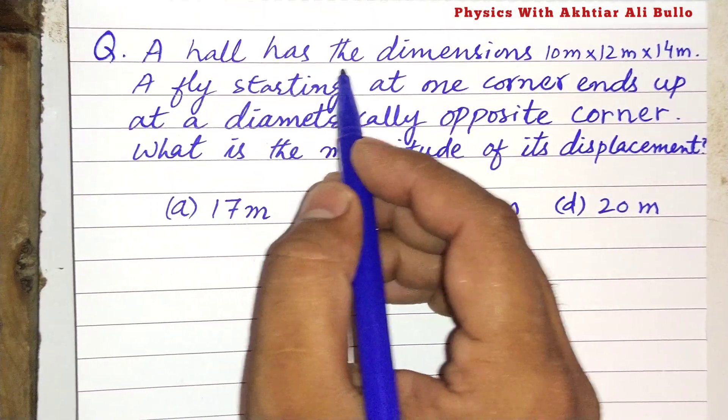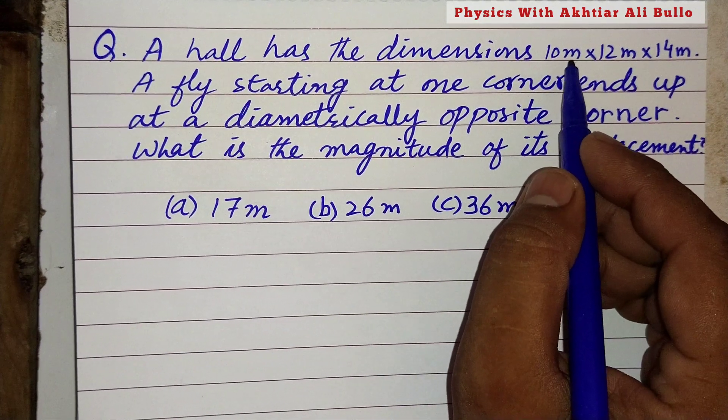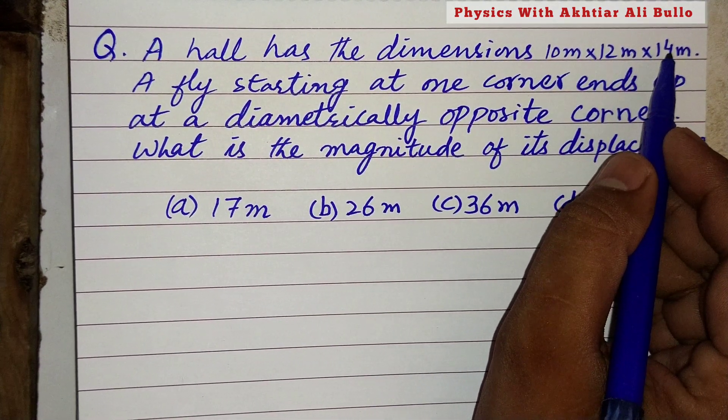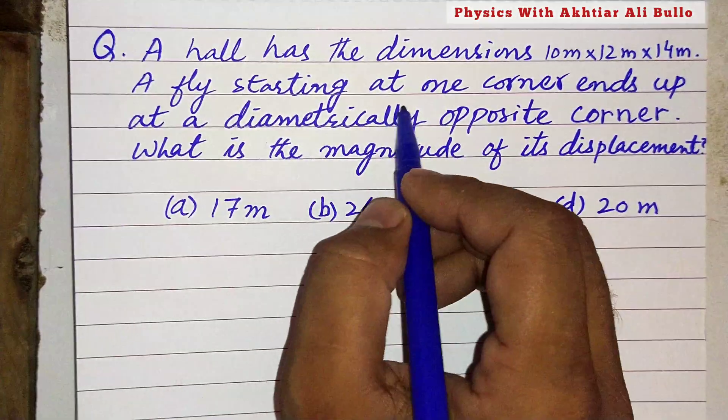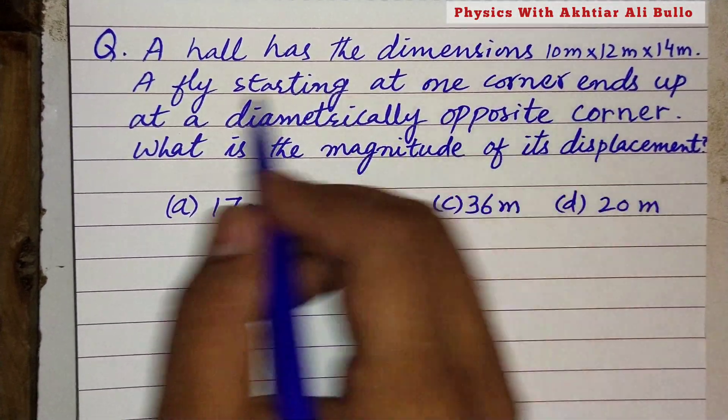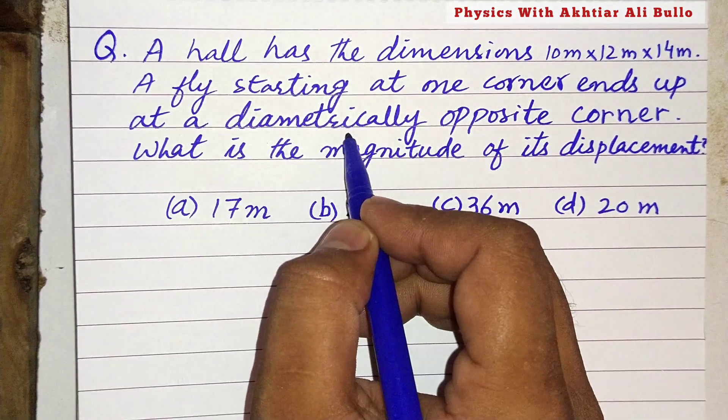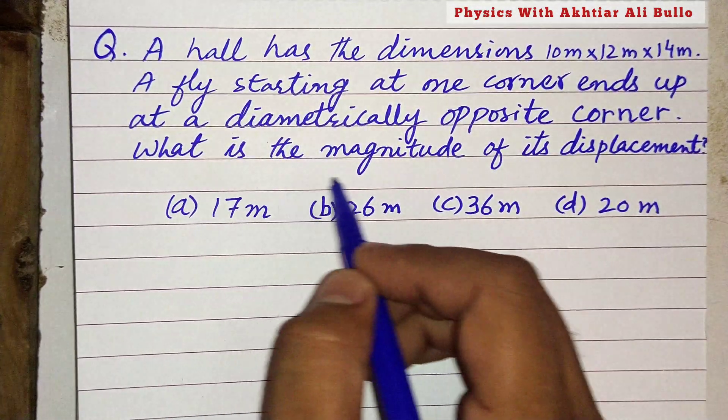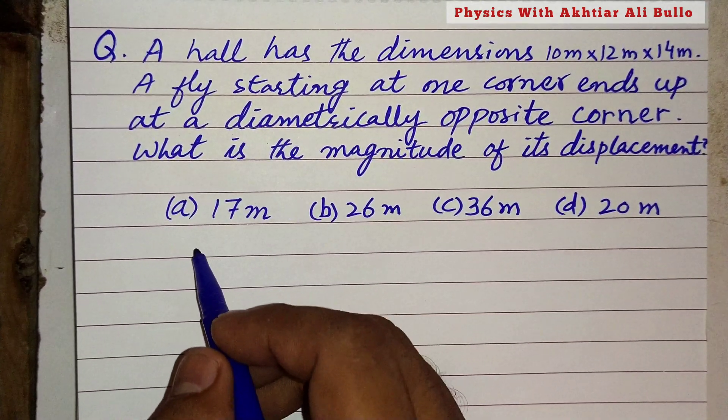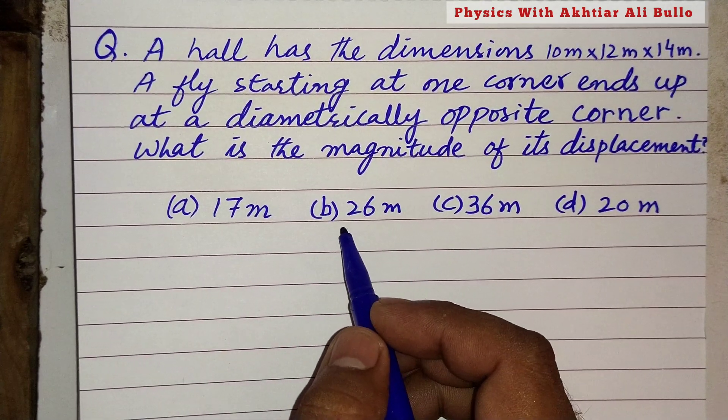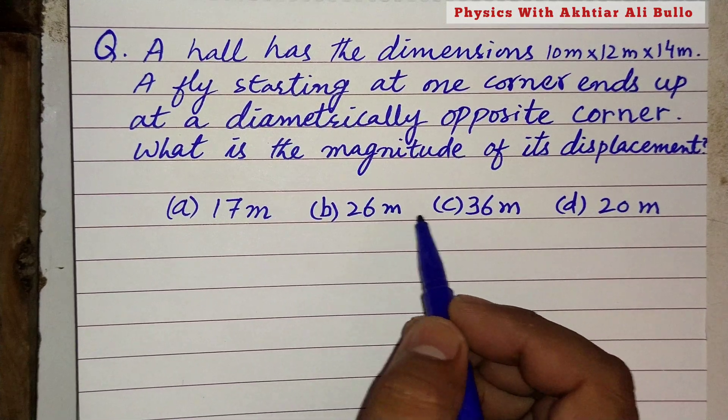A hall has the dimensions 10 meters by 12 meters by 14 meters. A fly starting at one corner ends up at a diametrically opposite corner. What is the magnitude of its displacement?